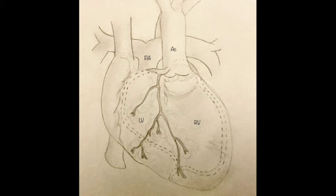The atrial switch-arterial switch operation, or double switch, aims to perform an anatomic repair for CCTGA when there is no valvular PS and a VSD is associated. The double switch procedure has been designed to allow the RV to pump deoxygenated blood to the lungs and the LV to pump oxygenated blood to the body.